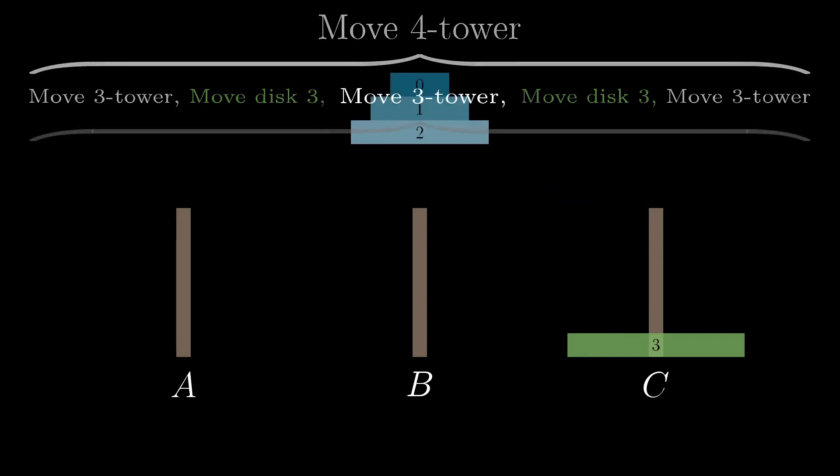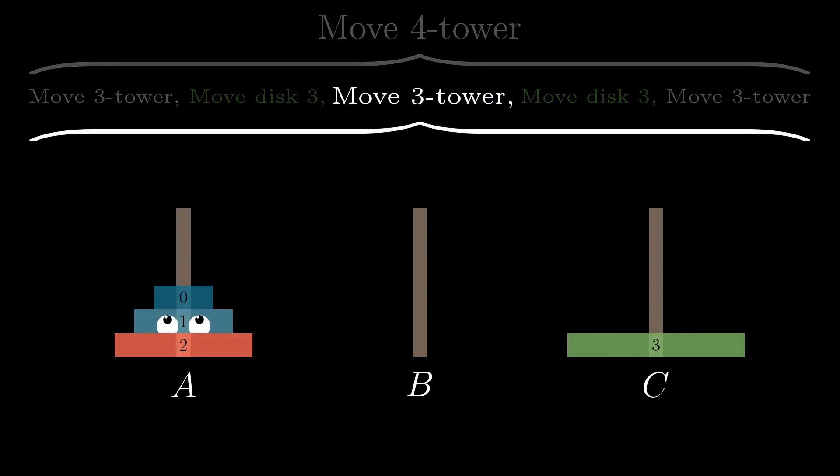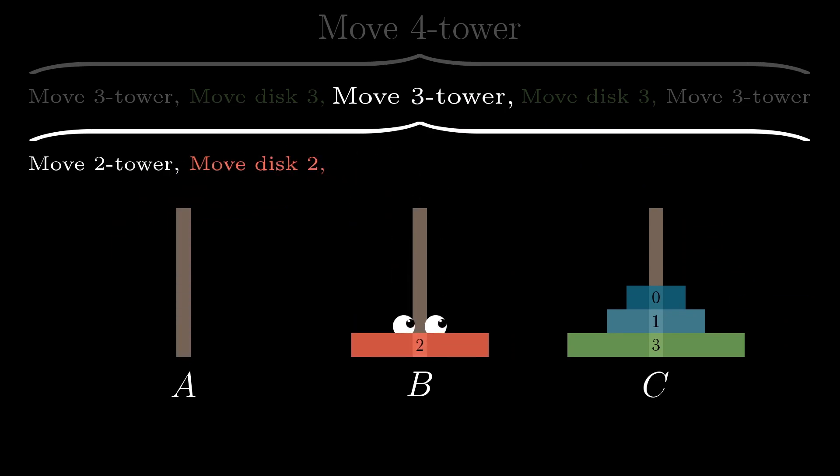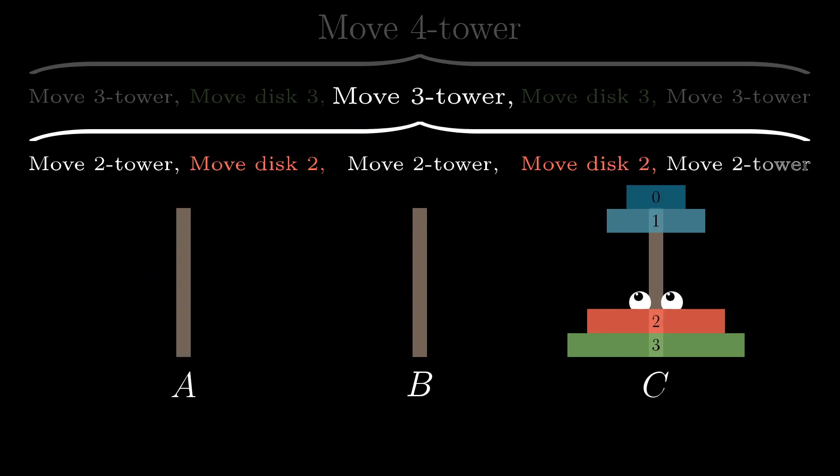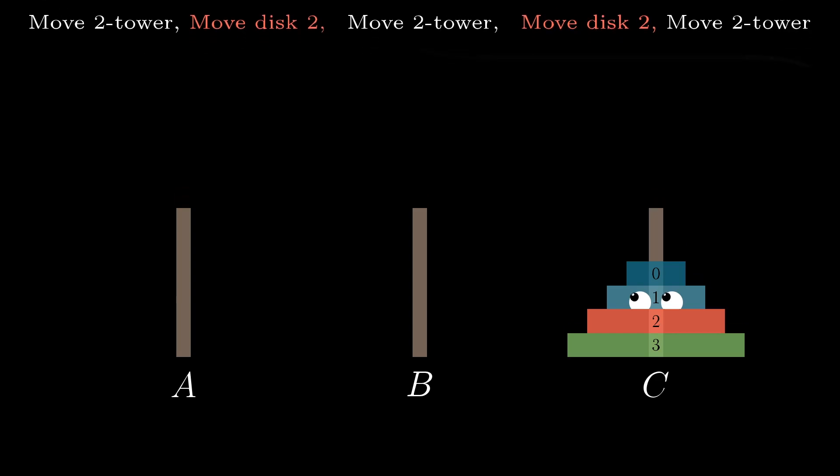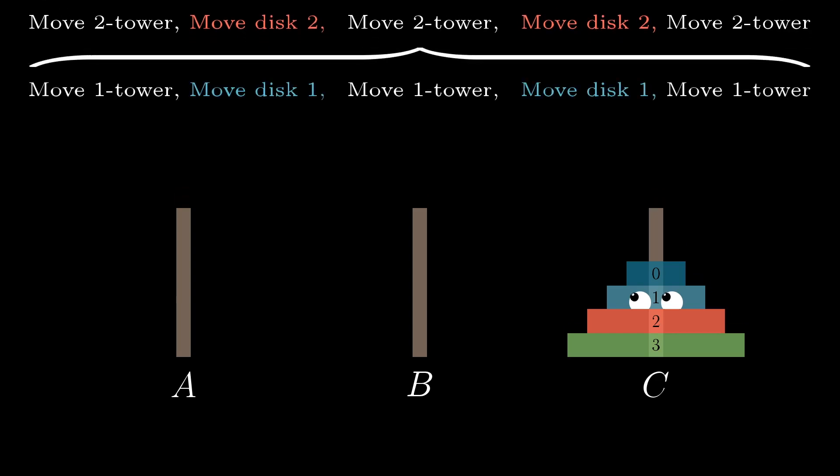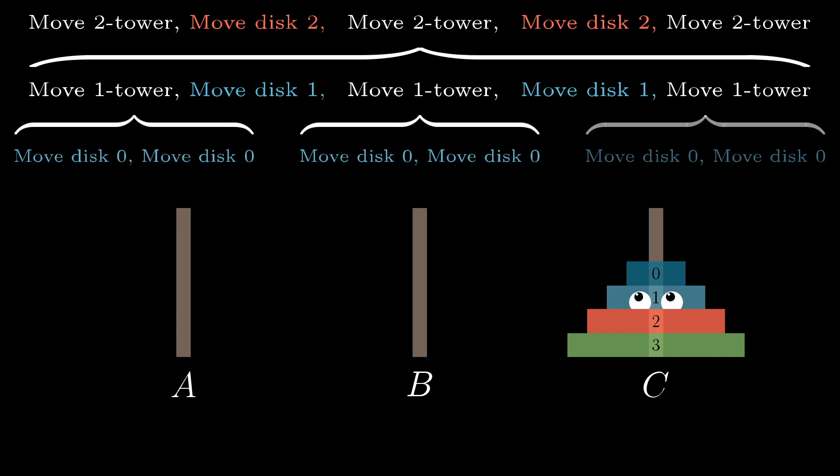The smaller case breaks down essentially the same way. You solve it for two disks, move disk number two, solve for two again, move disk number two, then solve for two disks yet again. As you keep subdividing in this self-similar pattern, expanding each subproblem into its own set of subproblems, eventually you get to the smallest subproblem of them all, moving a tower of size one, which just involves moving disk number zero twice.